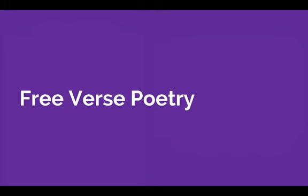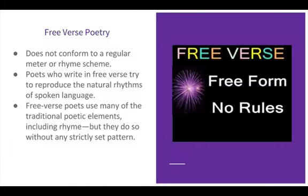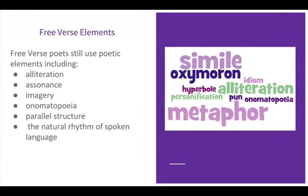The next type of poem we'll talk about is free verse. Free verse is very different from lyric and narrative in many ways, but it also has a couple of similarities. Free verse poetry does not conform to a regular meter or rhyme scheme. Poets who write in free verse try to reproduce the natural rhythms of spoken language. Free verse poets use many of the traditional poetic elements including rhyme, but they do so without any strict set pattern. Free verse poets still use poetic elements including alliteration, assonance, imagery, onomatopoeia, or parallel structure, but they focus on the natural rhythm of spoken language.